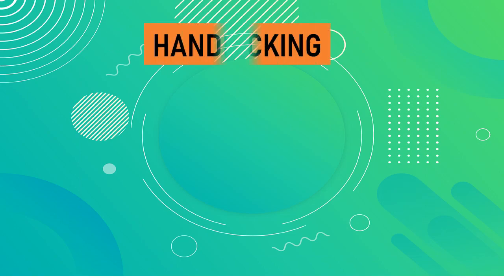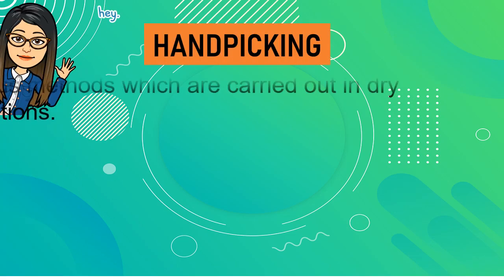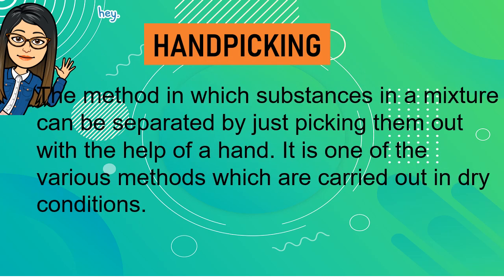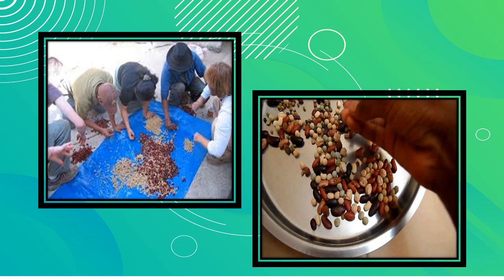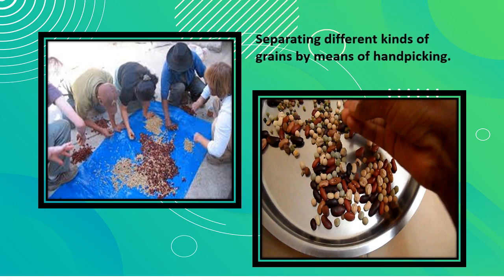Another way of separating a mixture is by means of handpicking. Handpicking is the method in which substances in a mixture can be separated by just picking them out with the help of a hand. It is one of the various methods carried out in dry conditions. It is commonly used to separate different kinds of grains in solid mixtures.